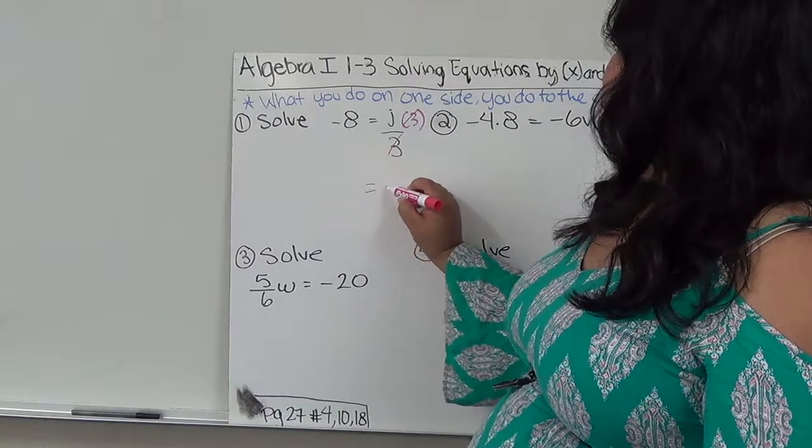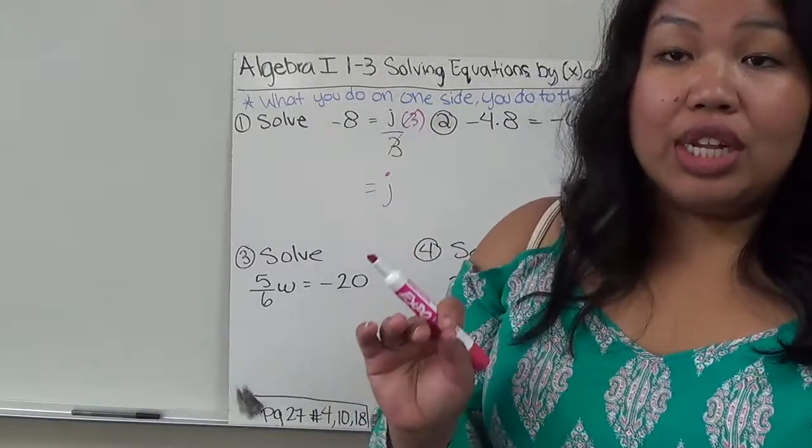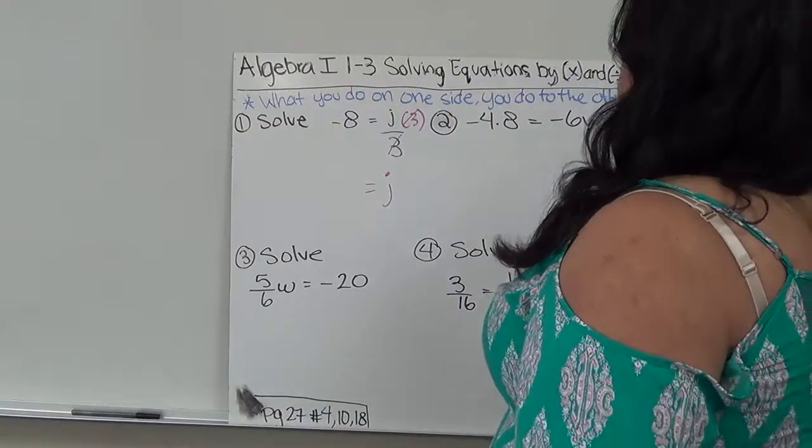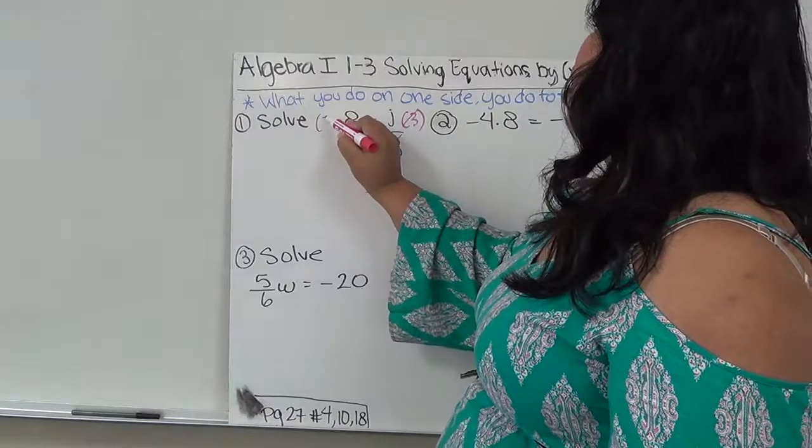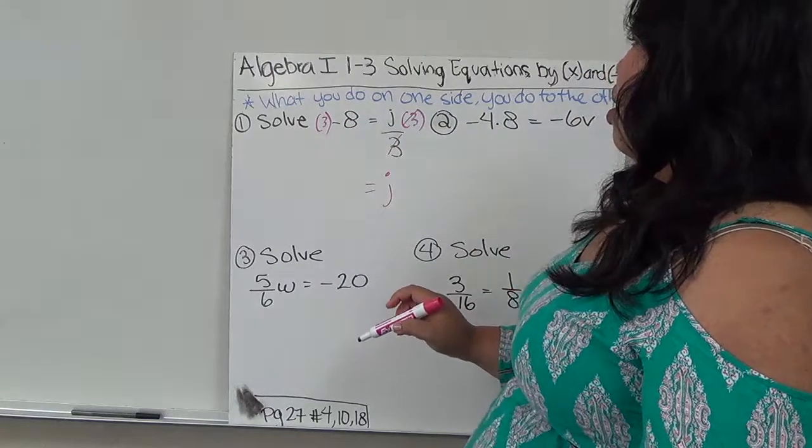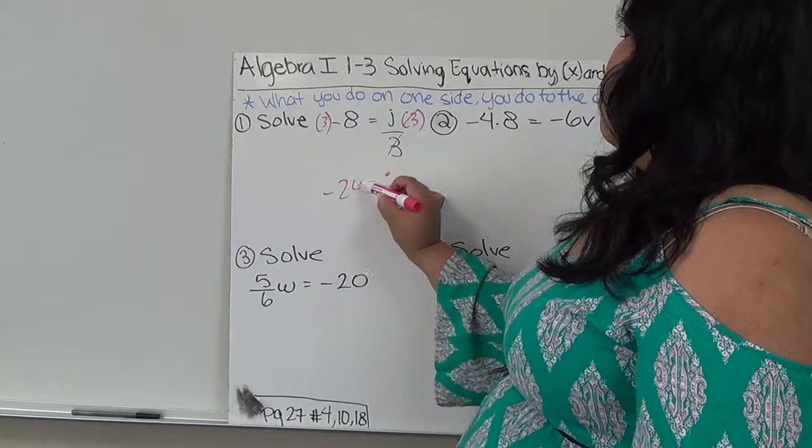So then I do what I wanted to do, I got J by itself. But in order to have the correct expression, what I do to one side, I have to do to the other. So I can multiply this by 3, but it means I must also multiply this side by 3. And 3 times negative 8 gives me negative 24.